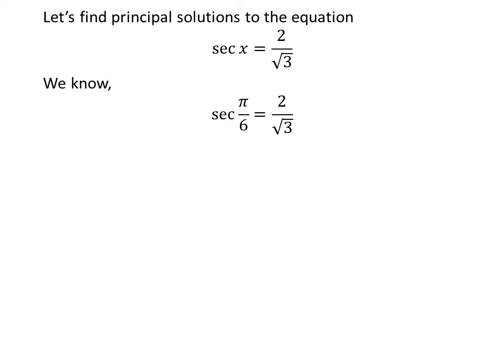We know the value of secant of pi upon 6 is 2 upon square root of 3. We know the value of secant of x repeats after the interval of 2 times pi, so secant of 2 times pi minus a is equal to secant of minus a. We also know the trigonometric identity secant of minus a is equal to secant of a.